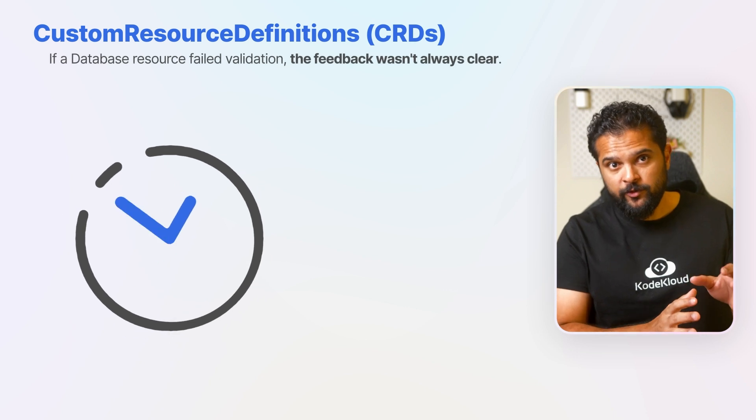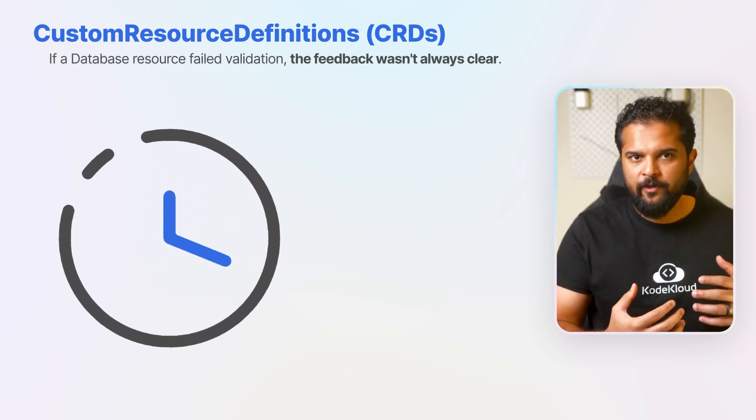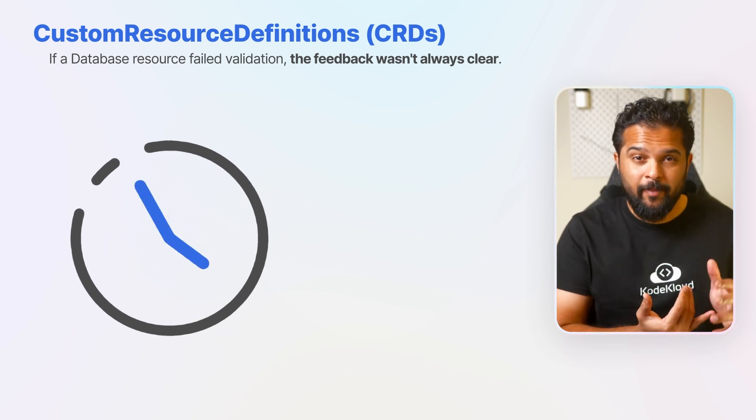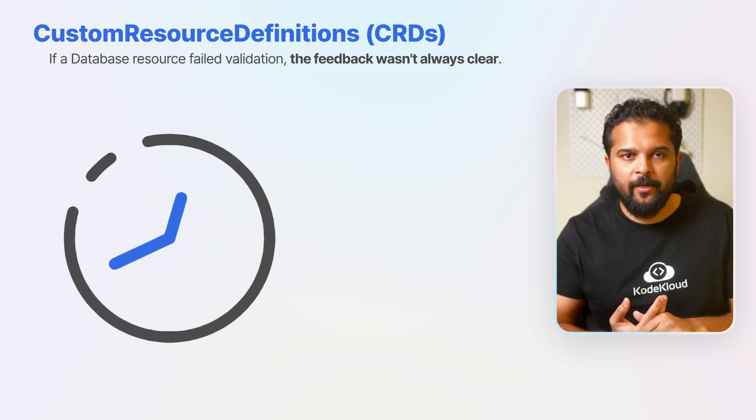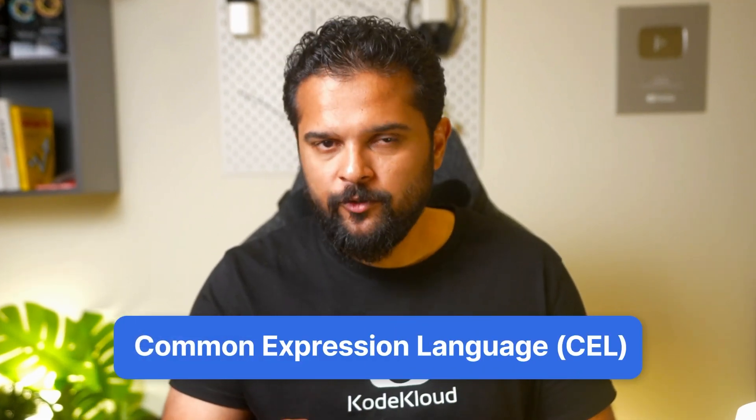If a database resource failed validation, the feedback wasn't always clear, so developers could spend unnecessary time debugging and trying to figure out what went wrong. With Kubernetes 1.28, the process of validating CRDs like our database resource has been greatly simplified and enhanced. Instead of relying on external webhooks, developers can now embed validation rules directly within the CRD schema using the Common Expression Language, or CEL.